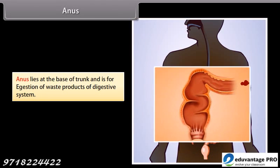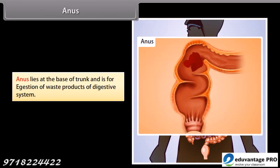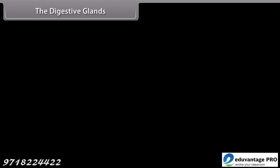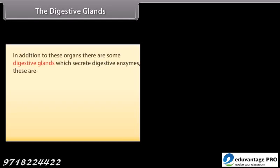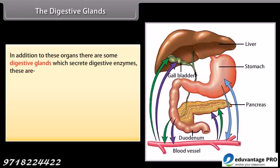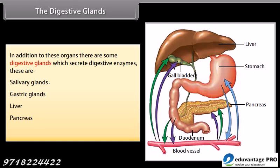The anus lies at the base of the trunk and is responsible for the egestion of waste products of the digestive system. In addition to these organs, there are some digestive glands which secrete digestive enzymes. These include salivary glands, gastric glands, liver, pancreas, and intestinal glands.